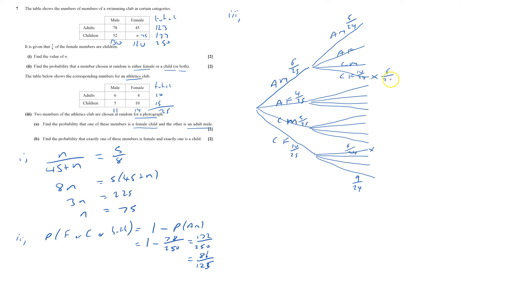So if I do that, I'm going to get 6 out of 25 times by 10 out of 24, and this will actually be the same. It will actually be 10 out of 25 times by 6 out of 24. Either way, both of them will come to 60 out of 600, and that also equals 60 out of 600. And so the probability of female child and adult male equals those added together, 120 out of 600, which actually is the same as 1/5. So that does the first part, that's A.